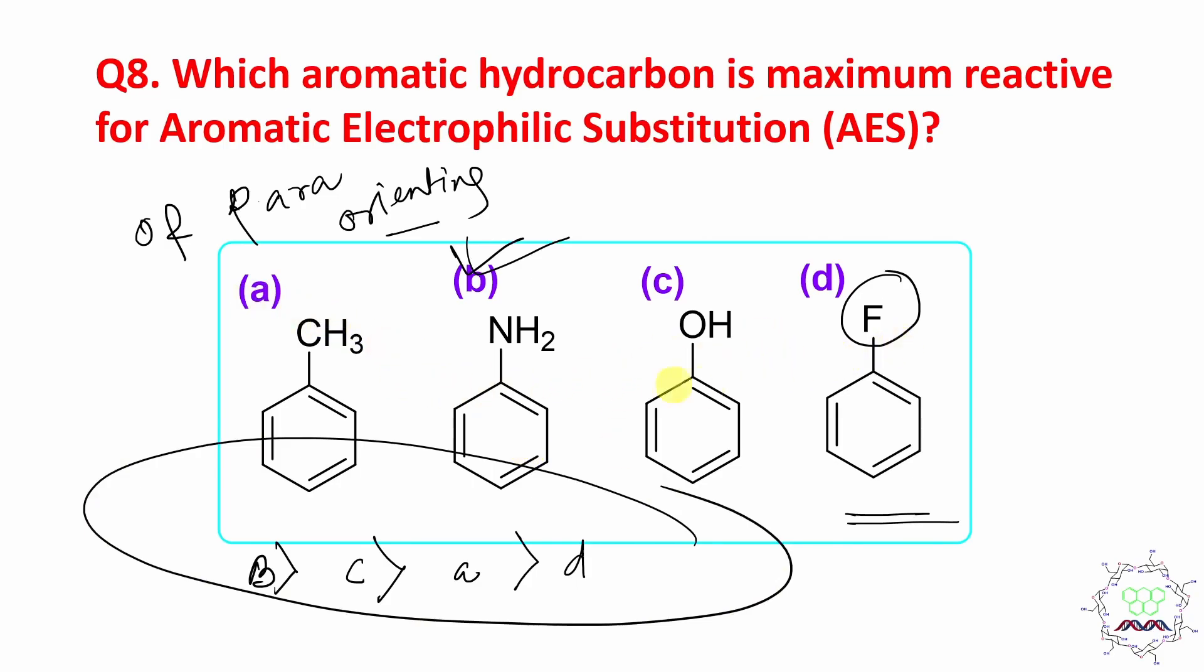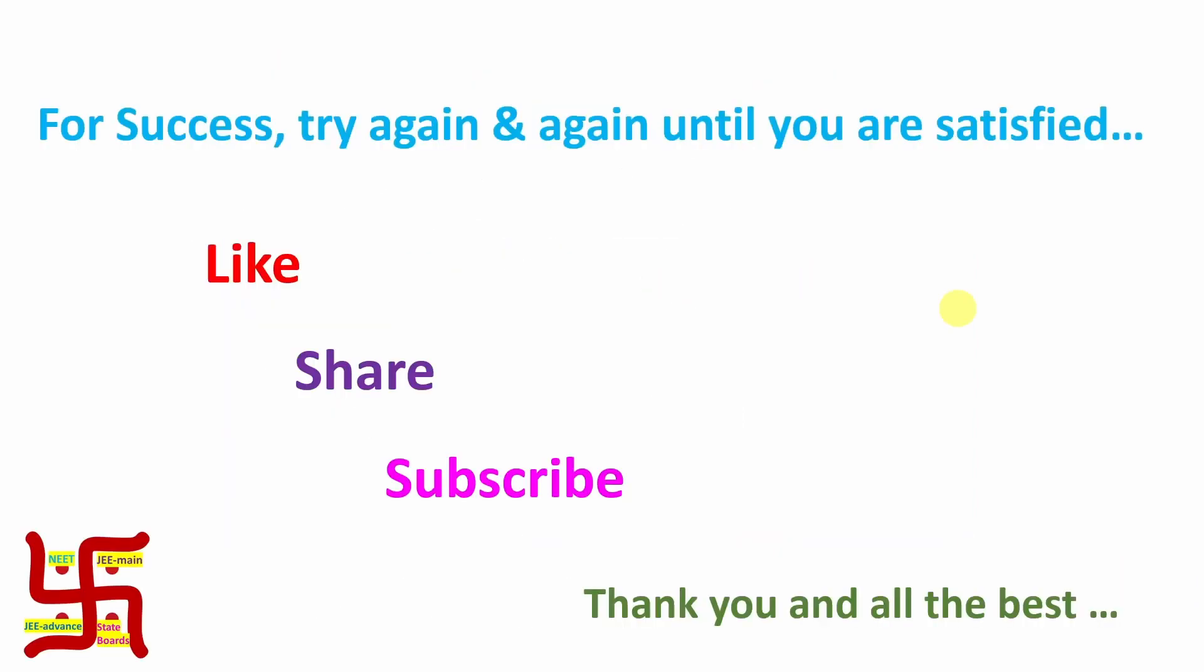Ranking: B greater than C greater than A greater than D. B and C because of dominating plus R effect, A hyperconjugation but not withdrawing effect, and for D, minus I is dominated over its plus R effect. So this is the overall discussion. I believe this video will be useful. Thanks for watching, see you in my next video, bye bye.